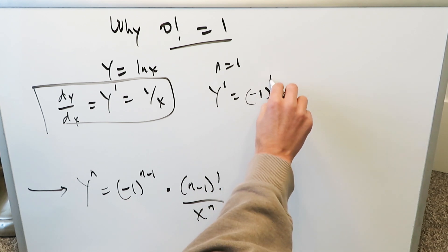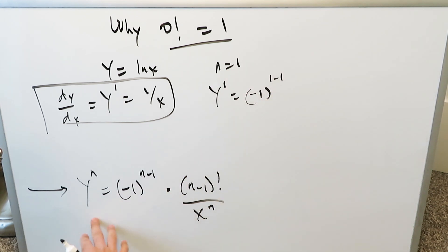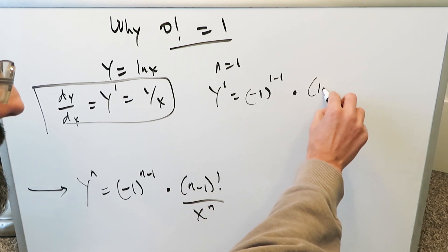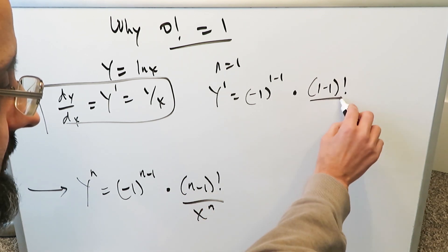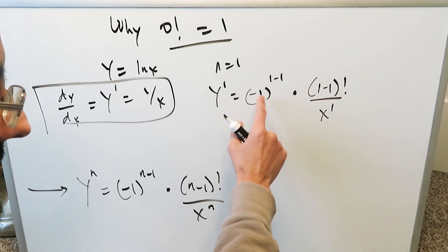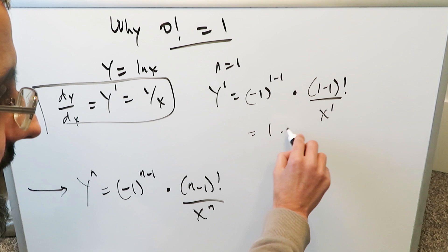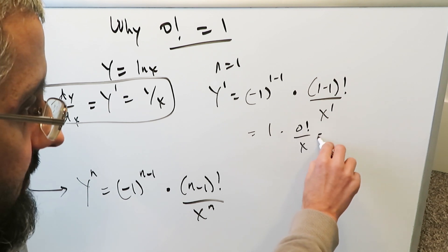It's like a rule template, times 1 minus 1 factorial divided by x to the power of 1. You clean this out, you have minus 1 to the power of 0, which is a 1, times 0 factorial over x, which you clean it out as 0 factorial over x.